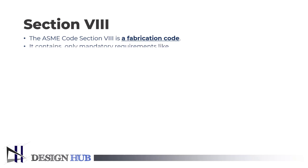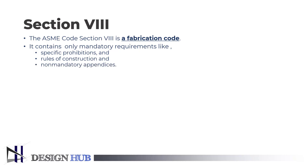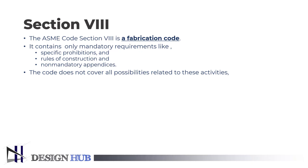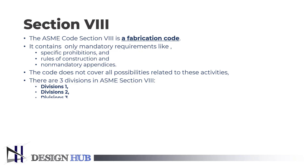BPVC section 8 is about fabrication codes. It contains only mandatory requirements that are specific prohibitions, rules of construction, and non-mandatory appendices. The code does not cover all the possibilities related to these activities. Further, ASME section 8 is divided into three divisions.